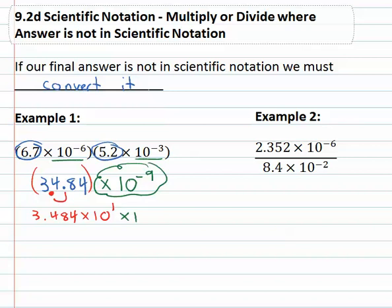And we don't forget that there was this times ten to the negative nine at the end, and we have to use our exponent properties to combine those tens together. This gives us 3.484 times ten to the one plus negative nine is negative eight.